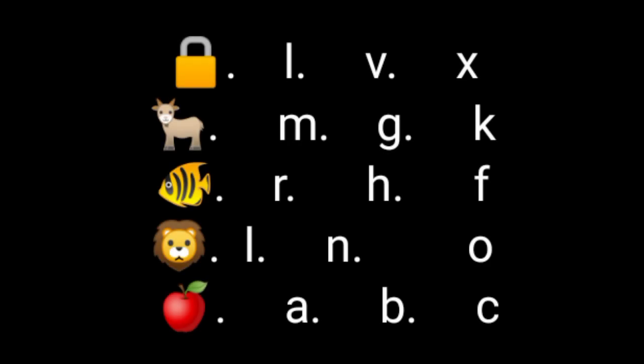Let's see — first one: there is a picture given, letters L, V, X — circle the correct one. Number two: another picture, letters M, G, K — circle the correct one. Next picture: R, H, F — circle whichever is correct. Next picture: L, N, O — circle the correct letter. And the last one: A, B, C — find out which is the correct letter going with the picture.